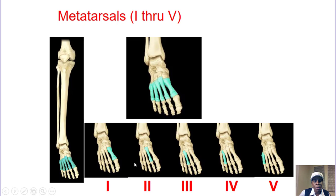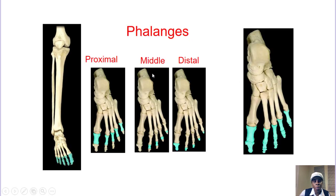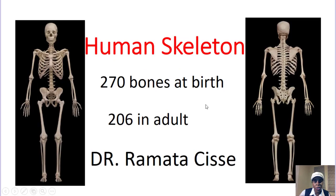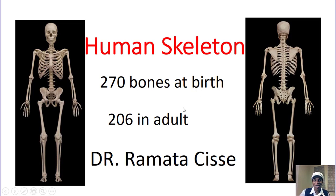The metatarsals — we have one to five. The phalanges: proximal, medial, and distal, just like the hand phalanges. Now these are the 206 human bones — covered in about 10 minutes. You can go back and practice to learn them better. Thank you very much, and I'll see you in class.